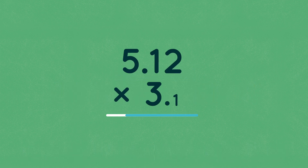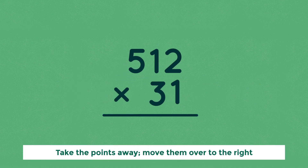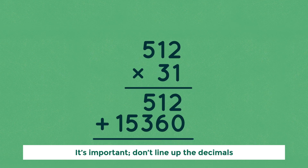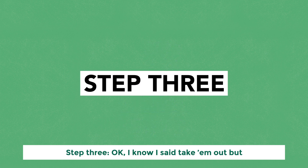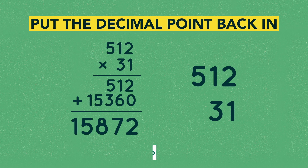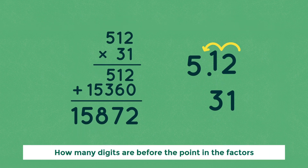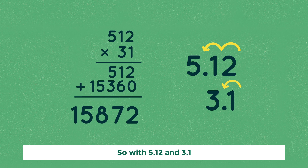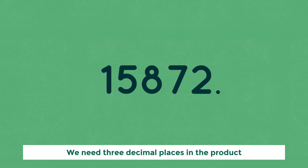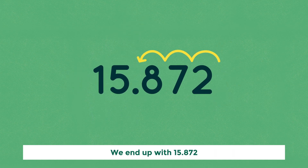Step two: stack the numbers to multiply. Take the decimal points away, move them over to the right. It's important — don't line up the decimals. Multiply to get 15,872. Step three: okay, I said take them out, but put the decimal point back in after you count how many digits are before the point in each factor. With 5.12 and 3.1 we need three decimal places, so in the product we end up with 15.872.